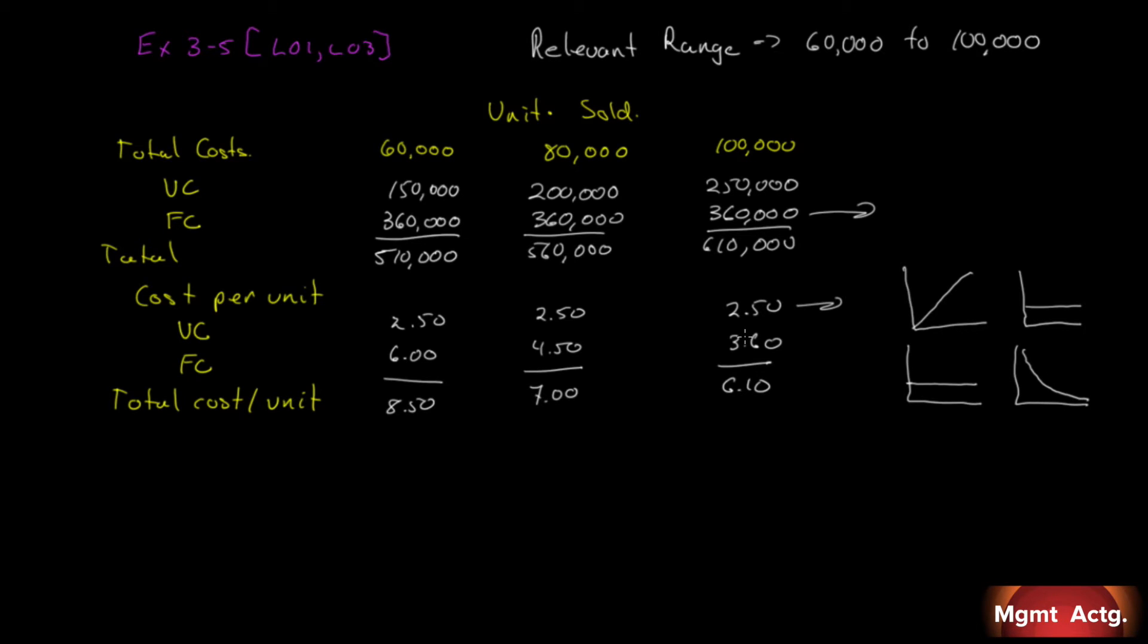Number two, assume that the company produces and sells 90,000 units during the year at a selling price of 750. Prepare a contribution format income statement for the year. Well, all right. First question we have to ask ourselves now is, is 90,000 within the relevant range? So that can we use these numbers here? And 90,000 is within the relevant range.